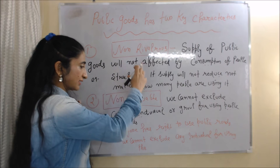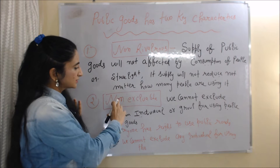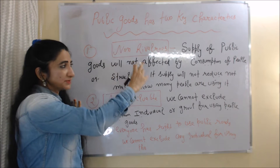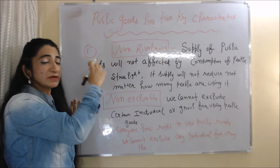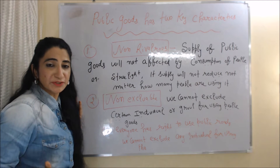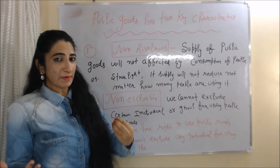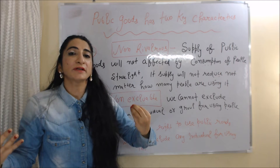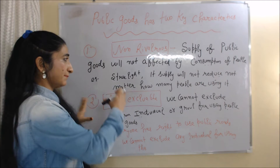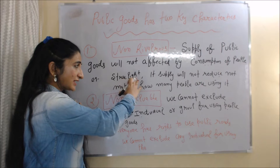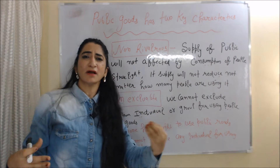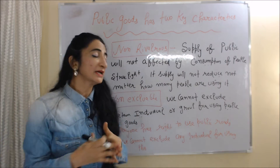Non-rivalries means the supply of public goods will not be affected by the consumption of people. For example, street lights — their supply will not reduce no matter how many people are using them.